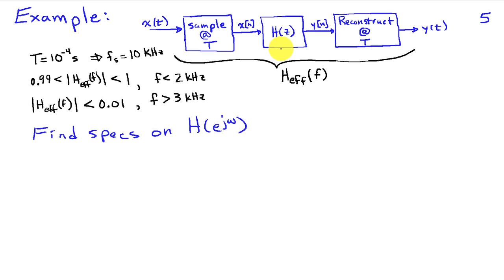so that the discrete time filter is intended to impart a filtering characteristic to a continuous time signal. So we have some effective frequency response of this overall system represented by h effective of f. We'll assume that our sampling rate is 10 kilohertz or the sampling interval t is 10 to the minus 4 seconds.